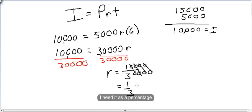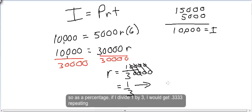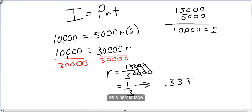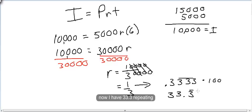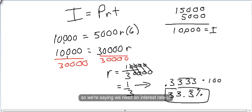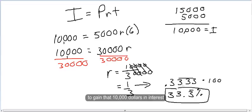Now I need it as a percentage. If I divide 1 by 3, I'll get 0.333 repeating. As a percentage, I need to convert this by multiplying by 100, giving me 33.3 repeating percent. And that would be my answer — we need an interest rate of 33.3% to gain that $10,000 in interest over six years.